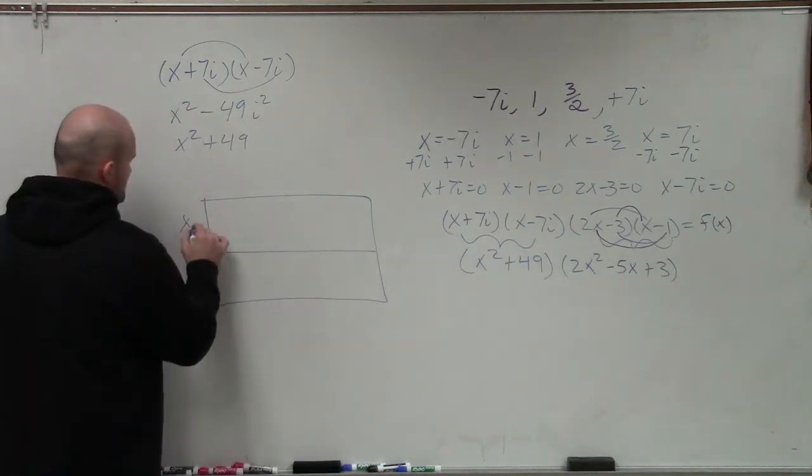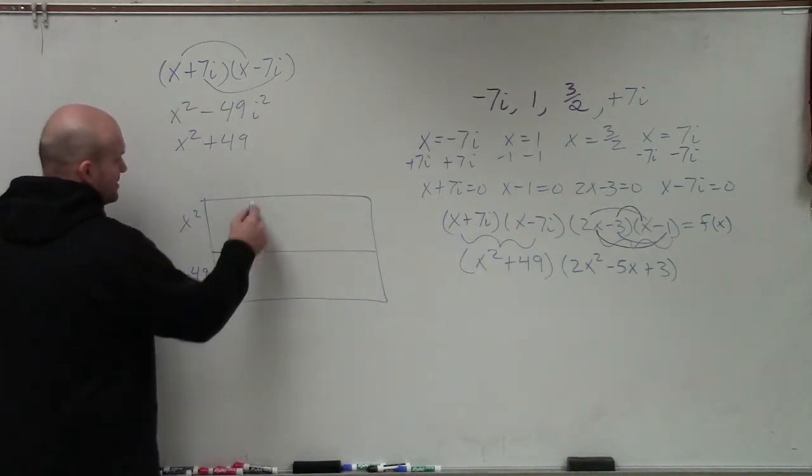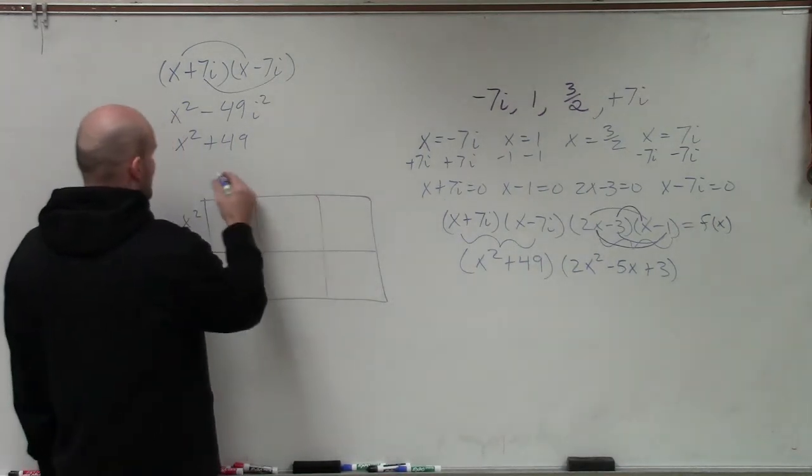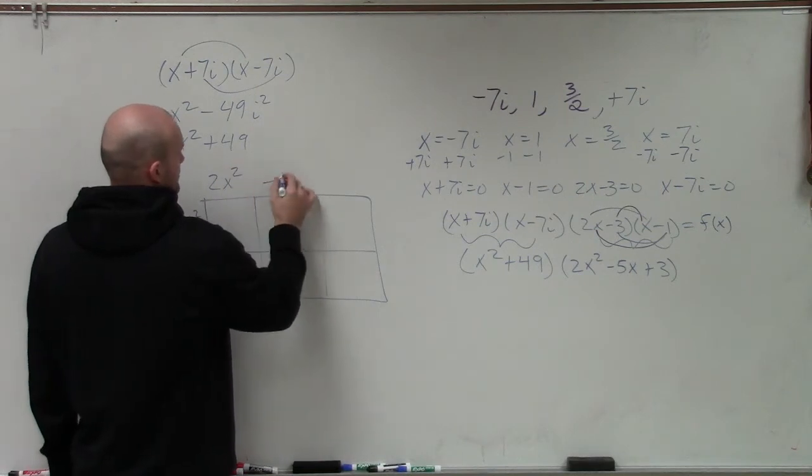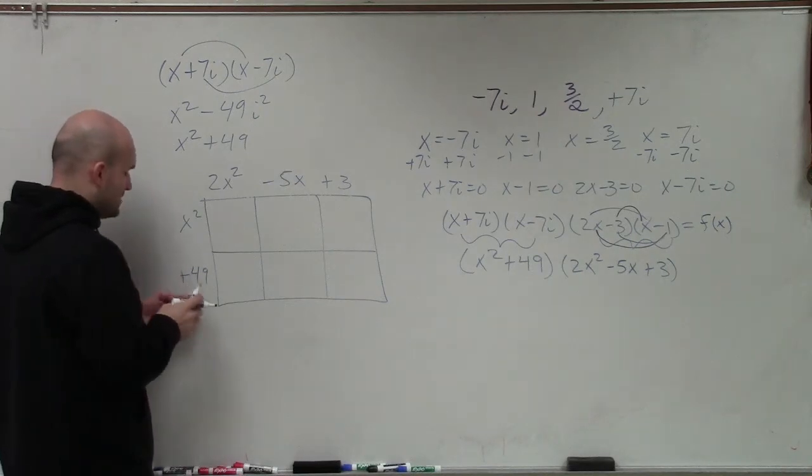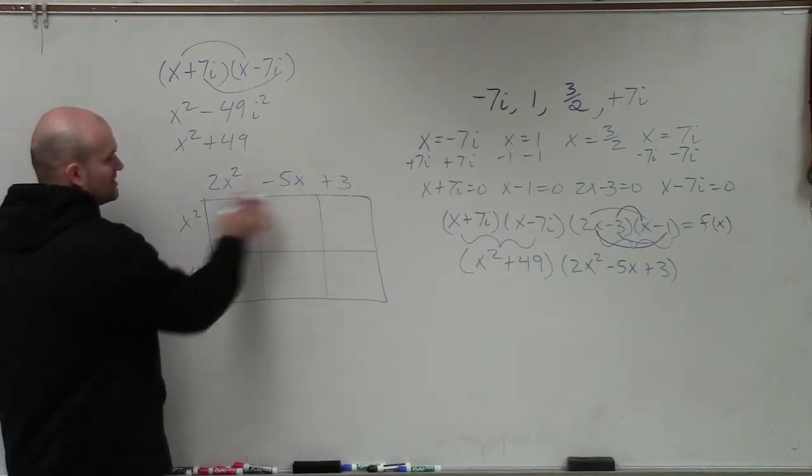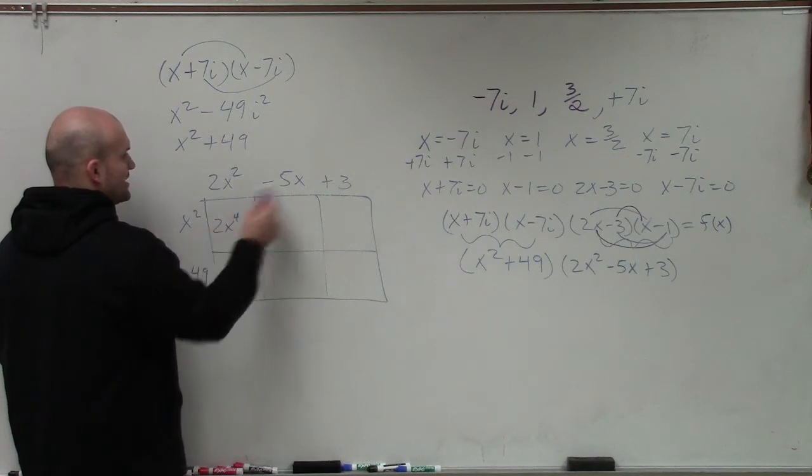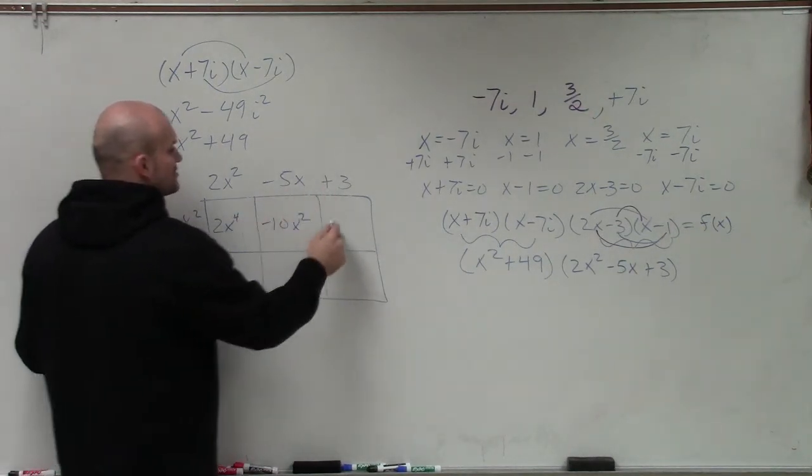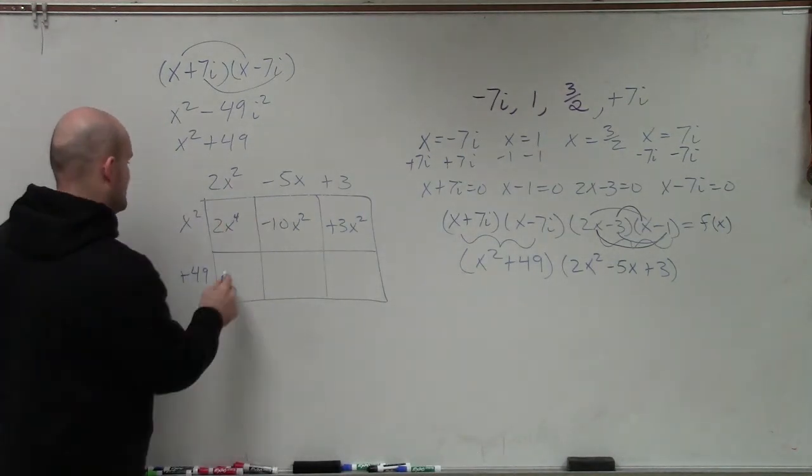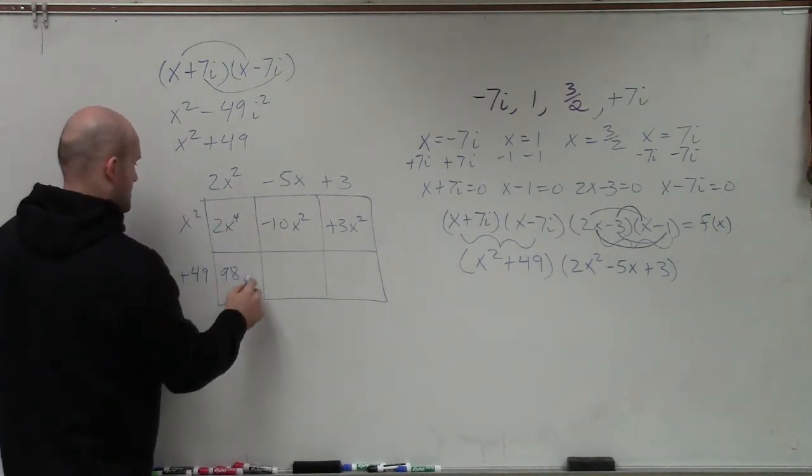I like the box method. It's nice and quick. It's easy. And it's organized. So when you have a binomial times a trinomial, one of my favorite methods is just to complete the box. So if you have a binomial on the side, create two rows. If you have a trinomial on the top, create three columns. Then to represent multiplying, we're going to find the product of each one of these areas. So we're going to find the area of each one of these squares. So we're going to multiply our length and our width. x squared times 2x squared is 2x to the fourth. x squared times negative 5 is negative 10x cubed. x squared times 3 is a positive 3x squared. 2x squared times 49, that's going to be 98x squared.